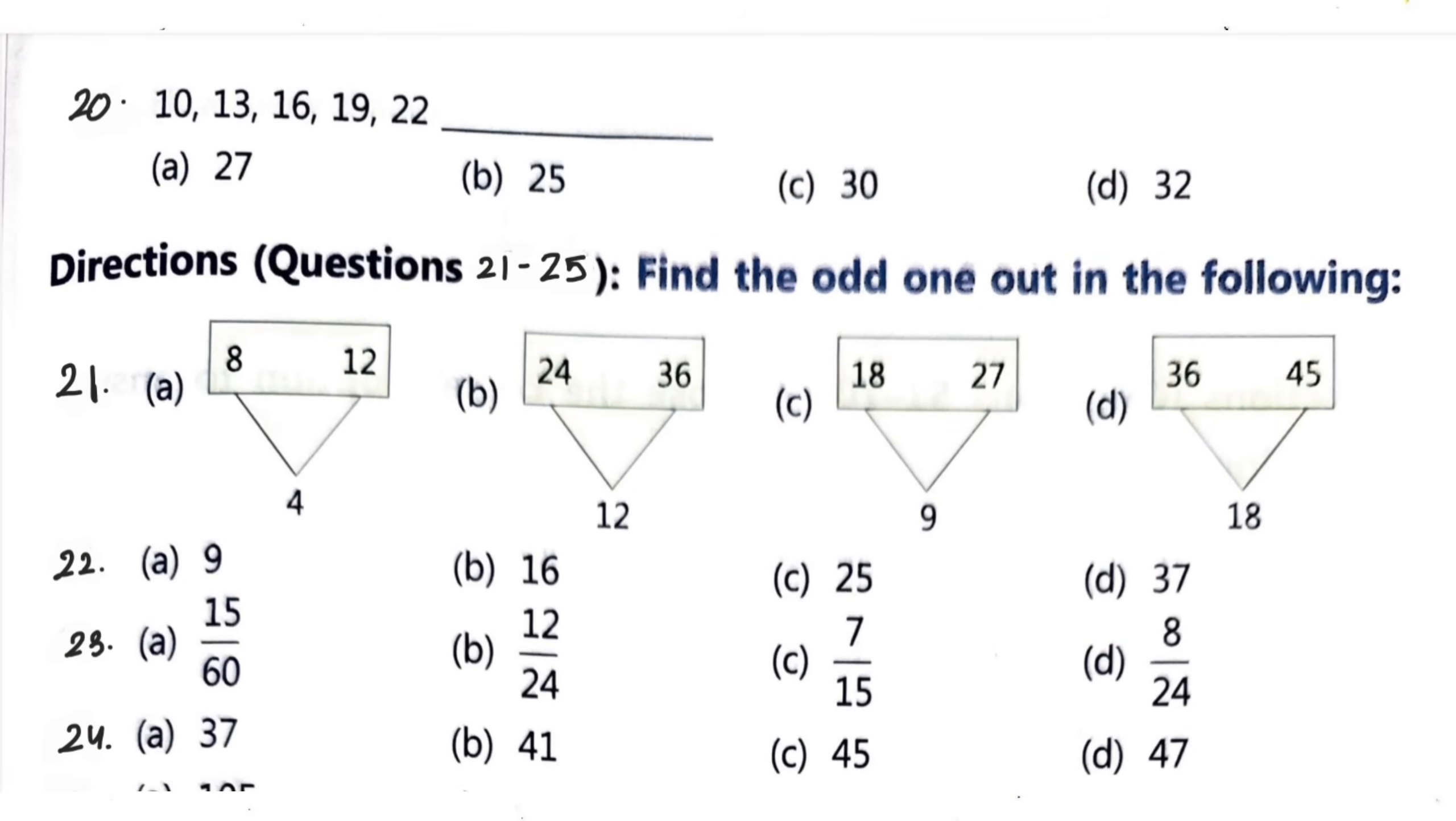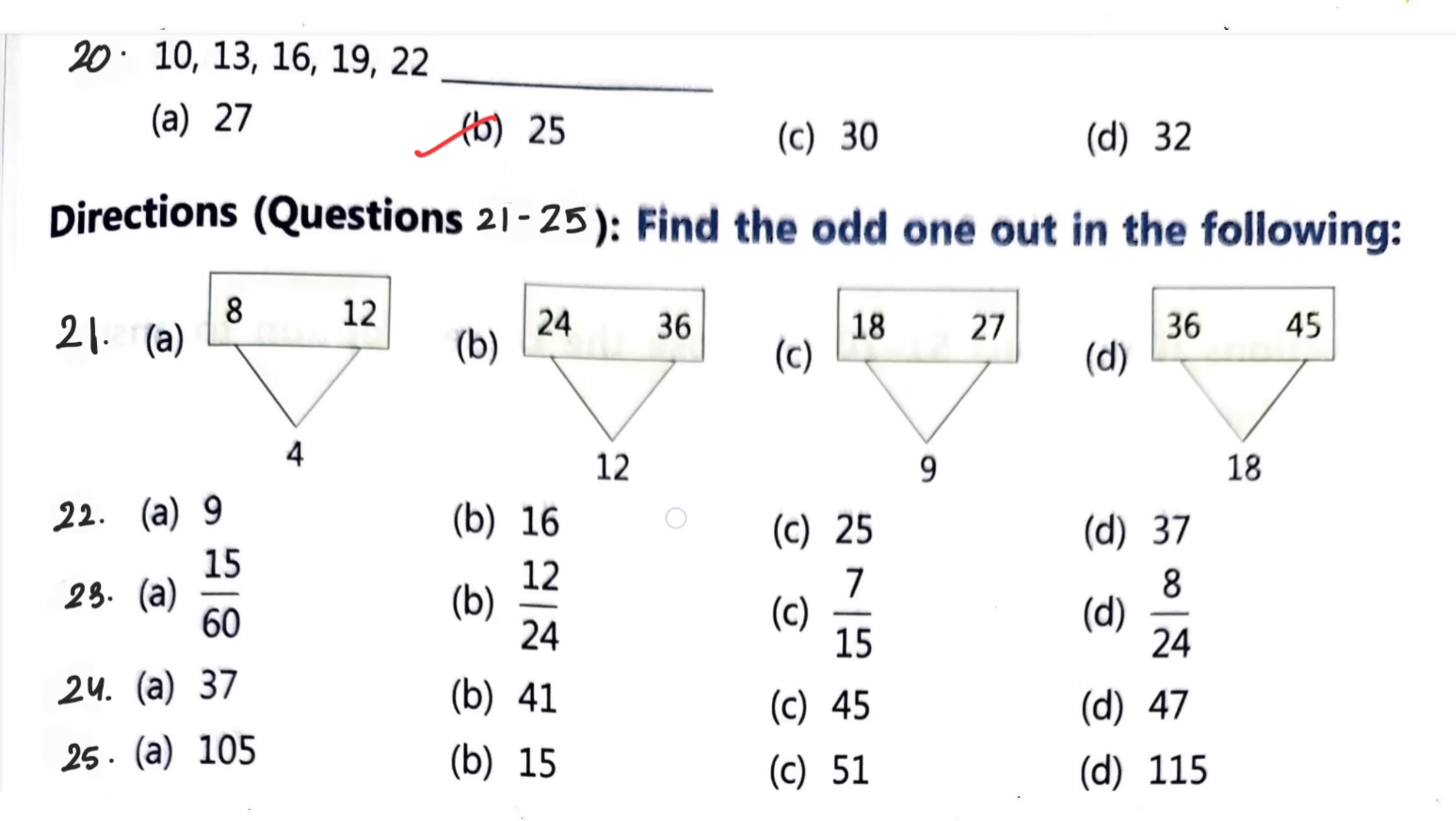Next question number 20: series is 10, 13, 16, 19, 22, dash. Correct option is option B, 25. Next, for questions 21 to 25, we need to find odd one out in the following questions. Question number 21: they have given four diagram-like arrangements of numbers. Out of this, odd one out is D option.